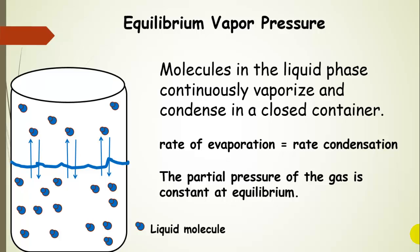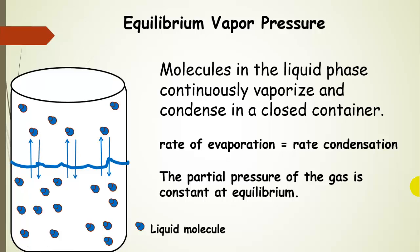So, equilibrium vapor pressure. What I have here is a closed container with a liquid phase. Molecules are entering the gas phase — they're evaporating — and then condensing back into the liquid phase. These two processes are happening at the same rate, so for every molecule that evaporates, another one condenses. At equilibrium, the number of molecules in the gas phase doesn't change in time. We call this the partial pressure of the gas, which is constant at equilibrium — that is the vapor pressure, the amount of pressure exerted by these molecules in the gas phase.